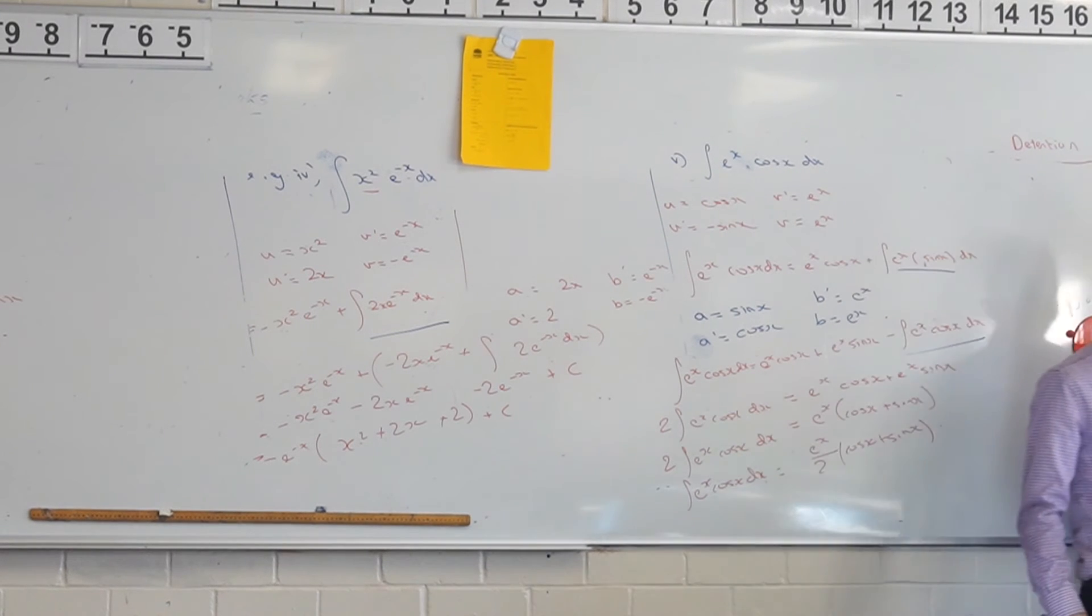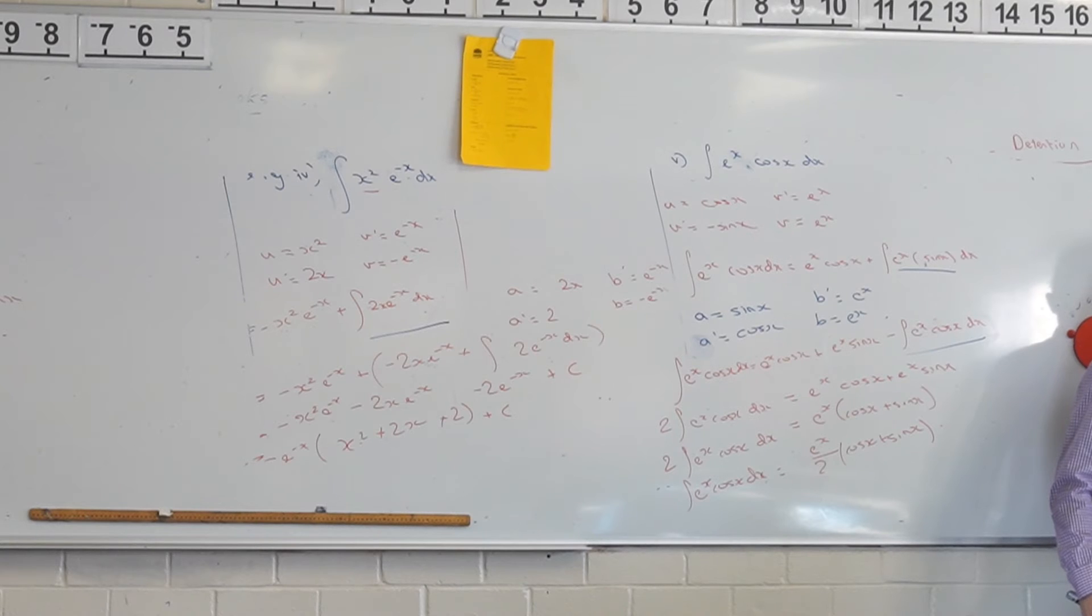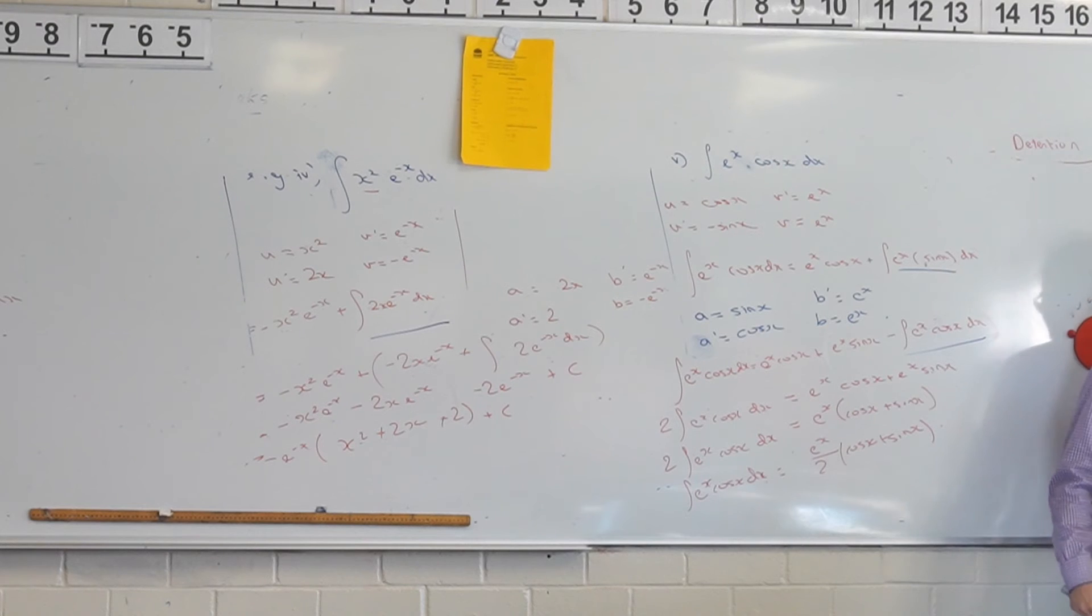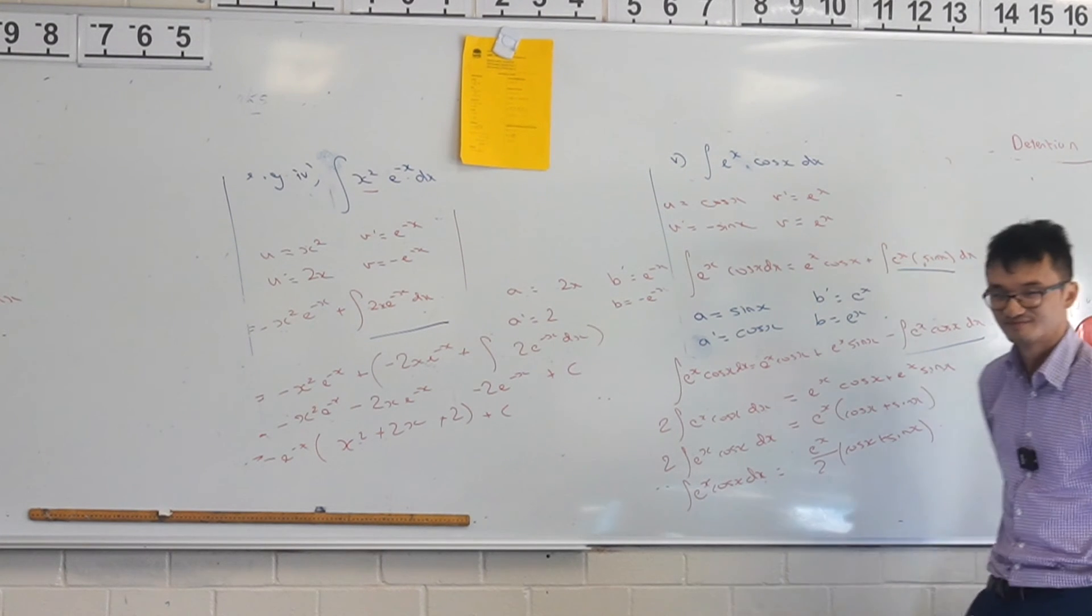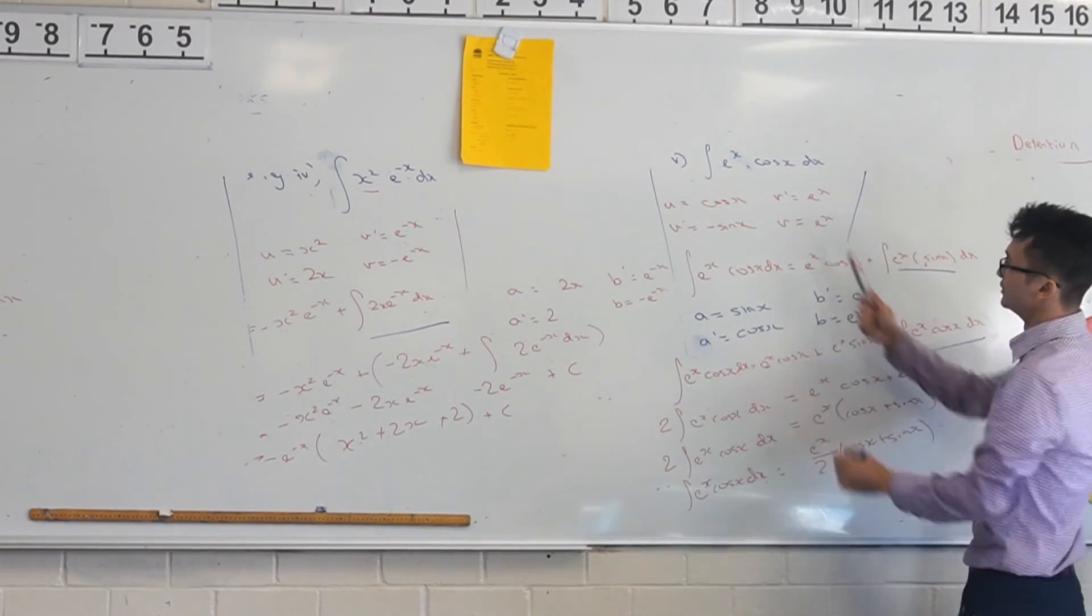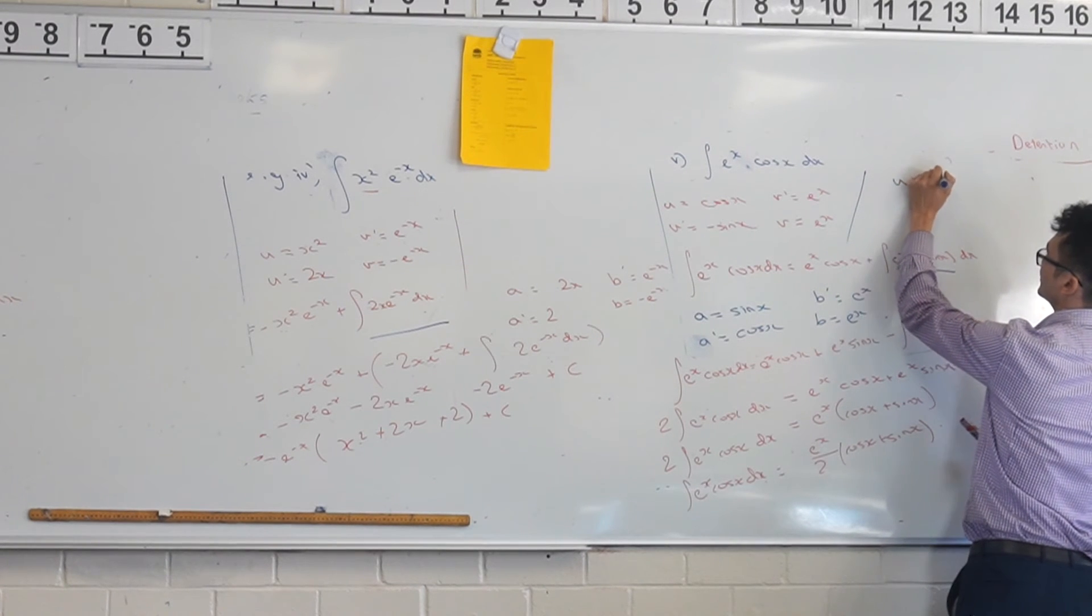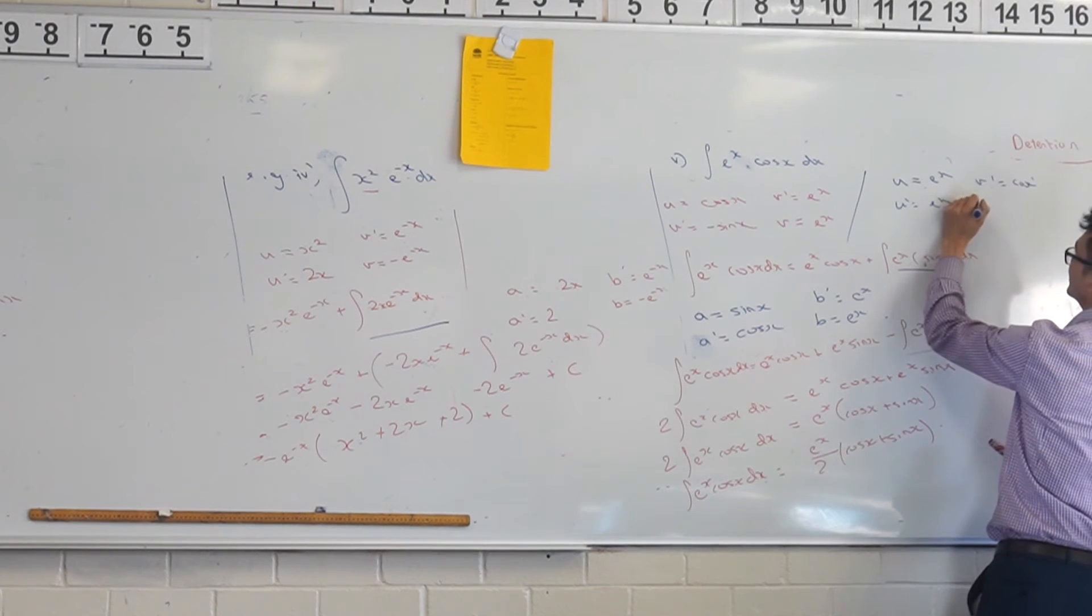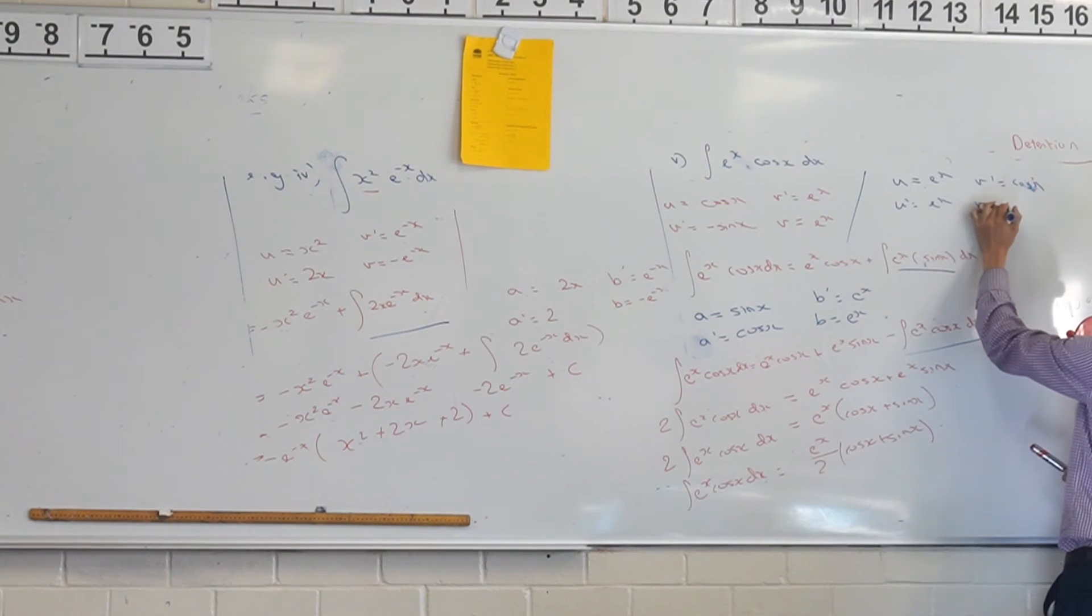So the idea is we have a result here without having to actually integrate. Exactly, yeah, exactly. If I picked e to the x for u, would we have reached that quicker? What do you think? So you said, okay, what if I picked u as e to the x? So we might have reached it quicker. Wow, I mean, what defines something being quicker?